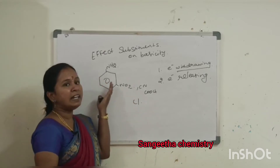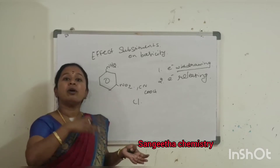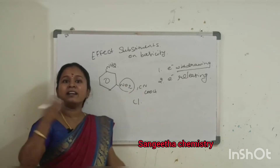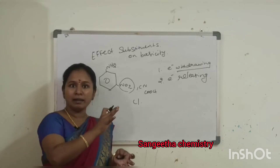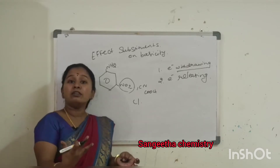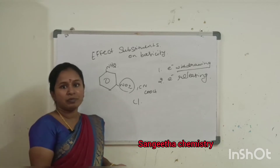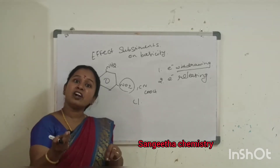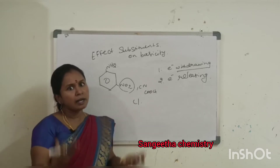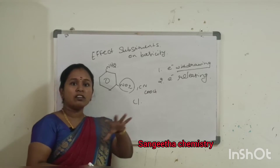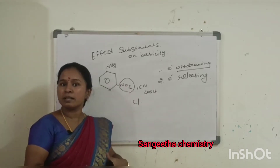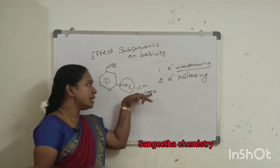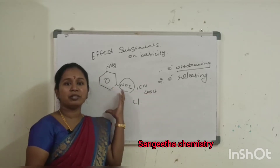When you are adding a meta-nitro group, the aniline will be less basic than aniline itself. Electron withdrawing groups like nitro, cyanide (CN), COOH, and halides, when added to aromatic amines, will decrease the basic character.